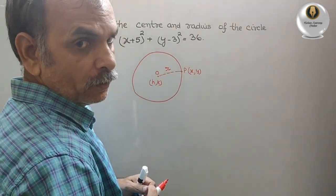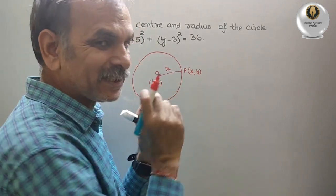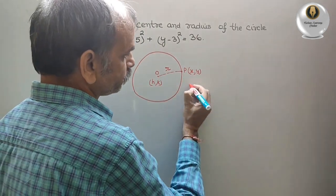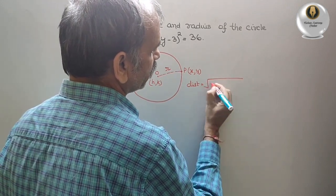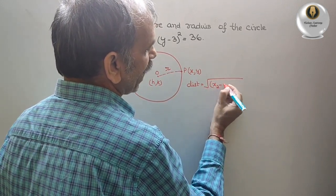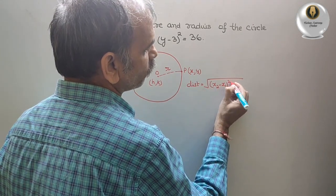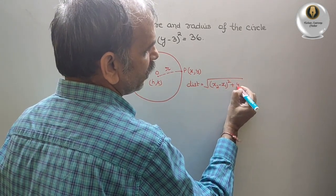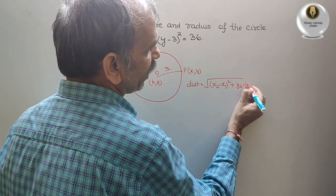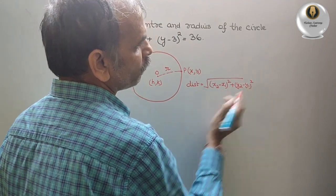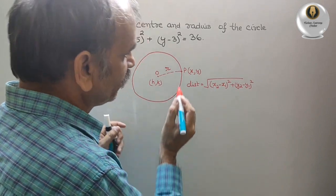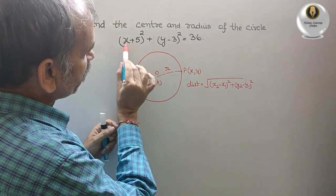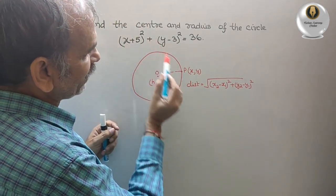Here we will use our distance formula. Distance is equal to root under (x₂ - x₁)² plus (y₂ - y₁)².